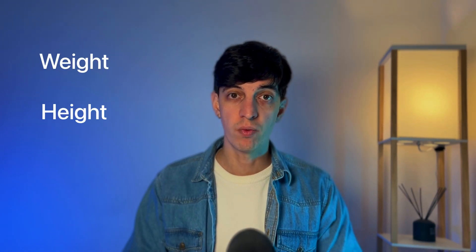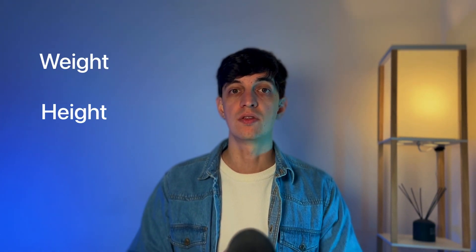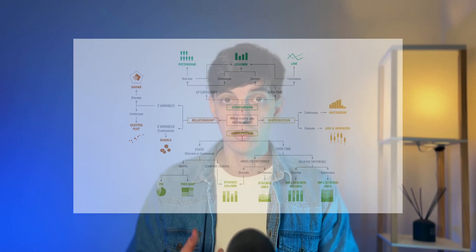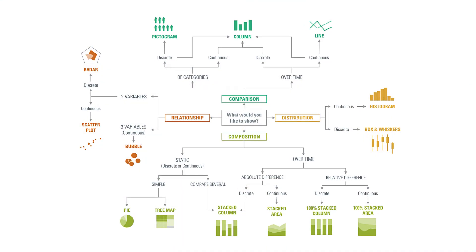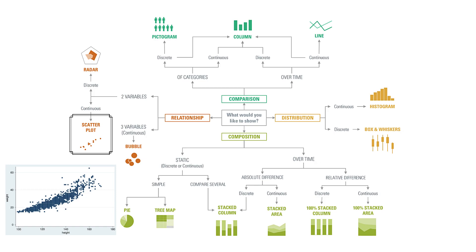Let's say I have weight and height that I'm working with — these are continuous variables. And let's say I want to show the relationships within them. If I follow this map, then I will go to relationship, two variables, continuous variables — and so the best chart to use would be a scatterplot.